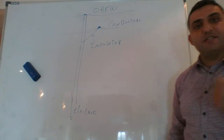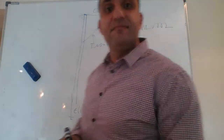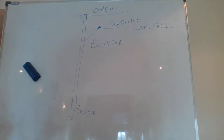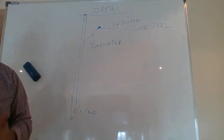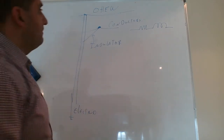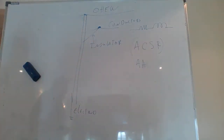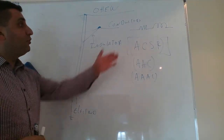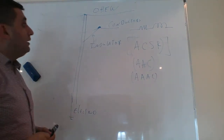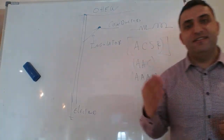The conductors are made of series resistance and series inductance. The most common transmission line conductor used is ACSR — aluminum conductor steel reinforced. We can also have AAAC conductors and other types, but the most used one is aluminum conductor steel reinforced.